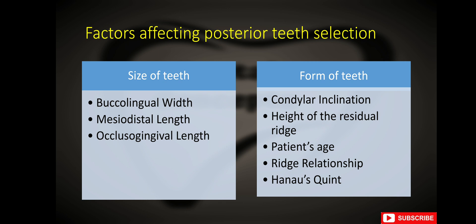What are the different criteria used for selection of posterior teeth? For posterior teeth selection, two different criteria are important: size of teeth and form of teeth. The size can be selected on the basis of available buccolingual width, available mesiodistal length, and occlusogingival length. The form of teeth can be selected on the basis of condylar inclination, height of the residual ridge, patient's age, ridge relationship, and Hanau quint.